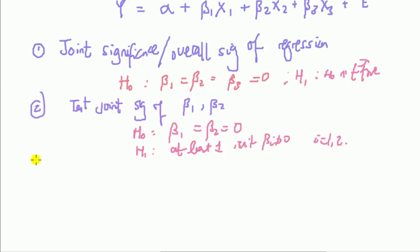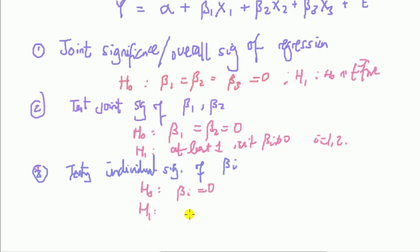And then finally, well I say finally, but it's off the top of my head. I think there is one definitely most common one: testing the individual significance. Alright, so individual significance of some parameter, beta i or something like that. Well, what that means is that we're testing the null that one individual parameter, say beta i, is zero versus the alternative that it's not zero.